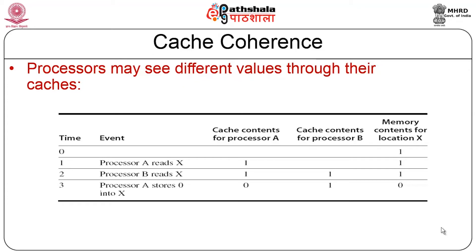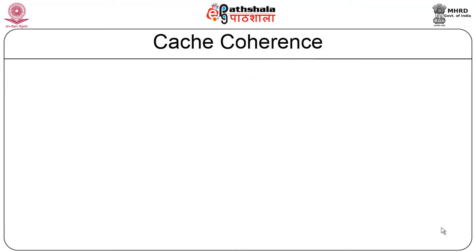You have multiple processors, each one caching the same data depending on their requirement, which leads to different caches having different information about the same block — which is definitely a problem. For example, processor A reads a value of x equal to 1 and caches it. Subsequently processor B also reads the same data, getting the same value from memory and caching it. But when processor A modifies the data and stores 0, B has cached a 1. There is an inconsistency of the same data shared between multiple processors — the cache coherence problem.